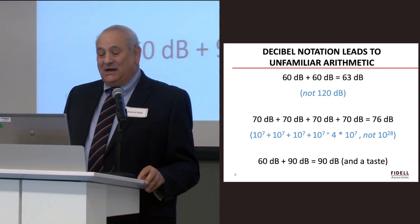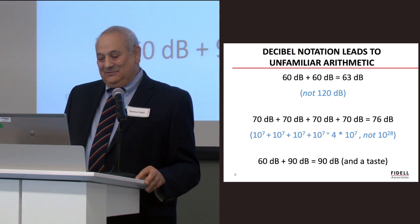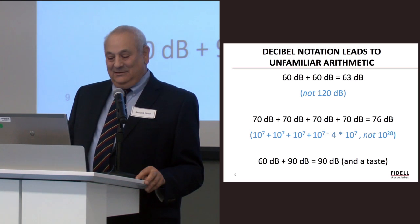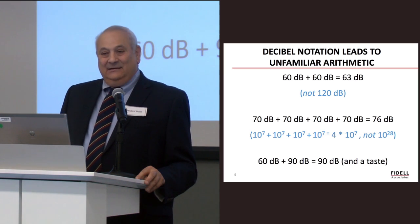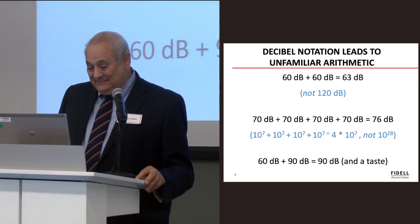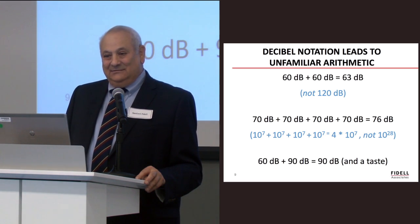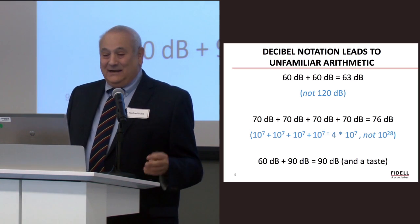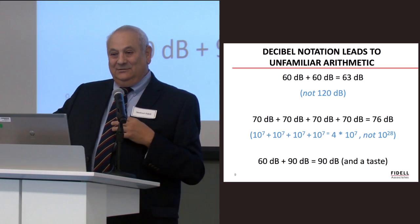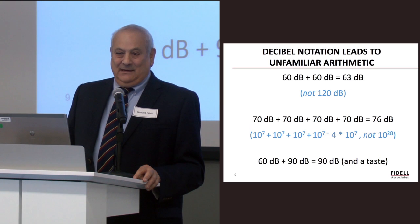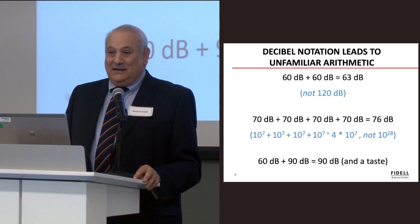Most obviously, you can't do simple arithmetic. Sixty dB plus sixty dB is only 63 dB, not 120. And 70 dB plus 70 plus 70 plus 70 is just 76 dB — because it's just four times, you don't add the exponents. And 60 dB combined with 90 dB — like adding one more plane to a bunch of others — is just 90 dB. That's because a million plus a billion isn't that much more than a billion.